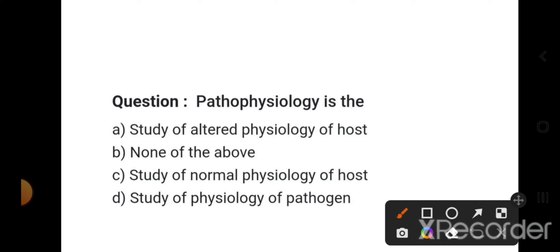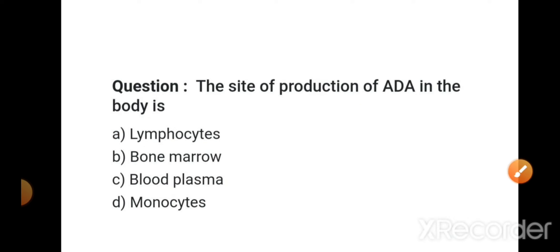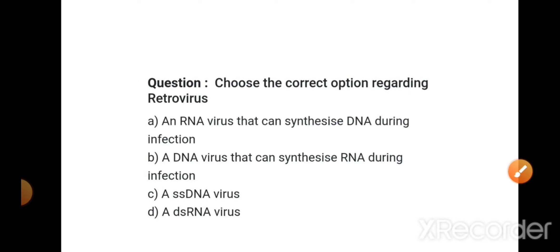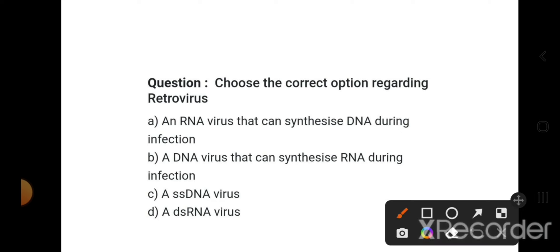Pathophysiology means the study of diseases - it is the study of the altered physiology of the host. The site of production of ADA in the body is lymphocytes. Choose the correct option regarding Retrovirus: it is an RNA virus that can synthesize DNA during infection, which is an exception to our central dogma.